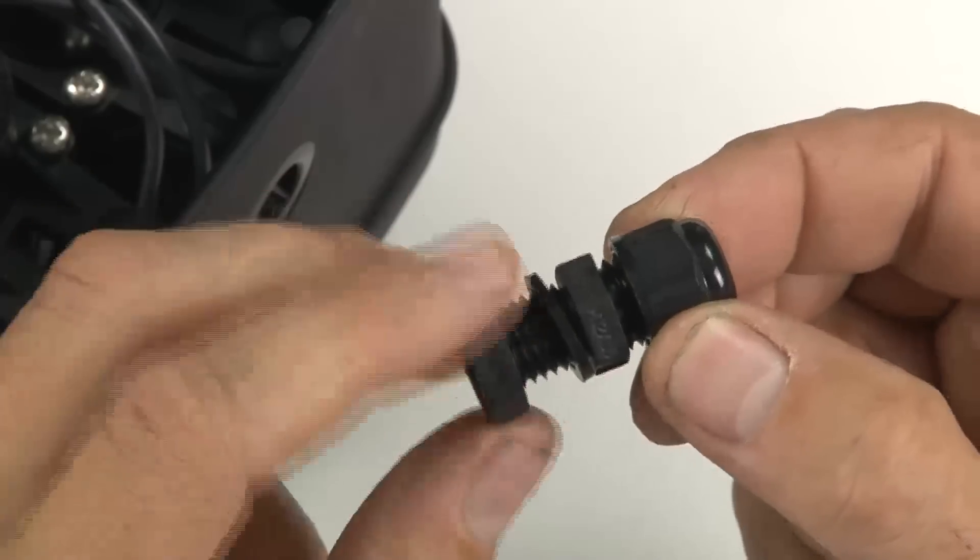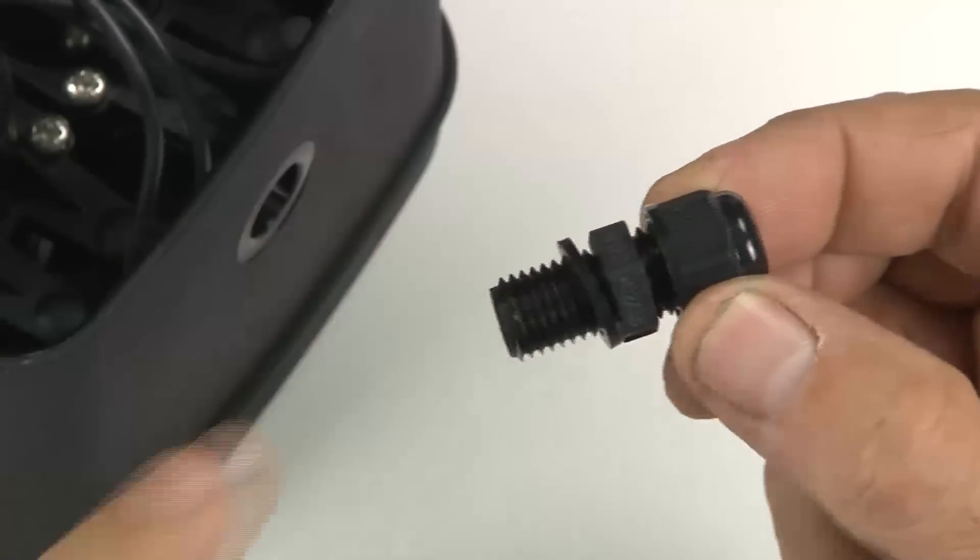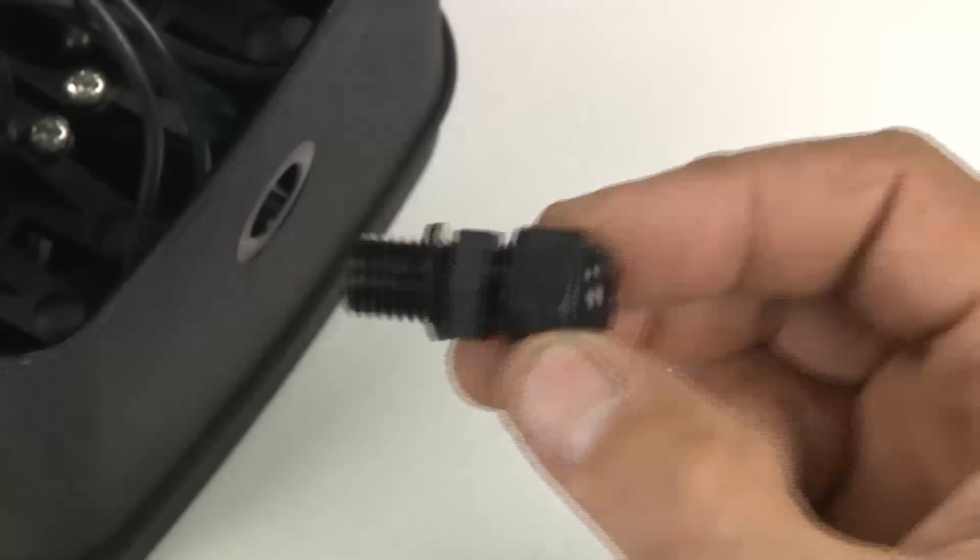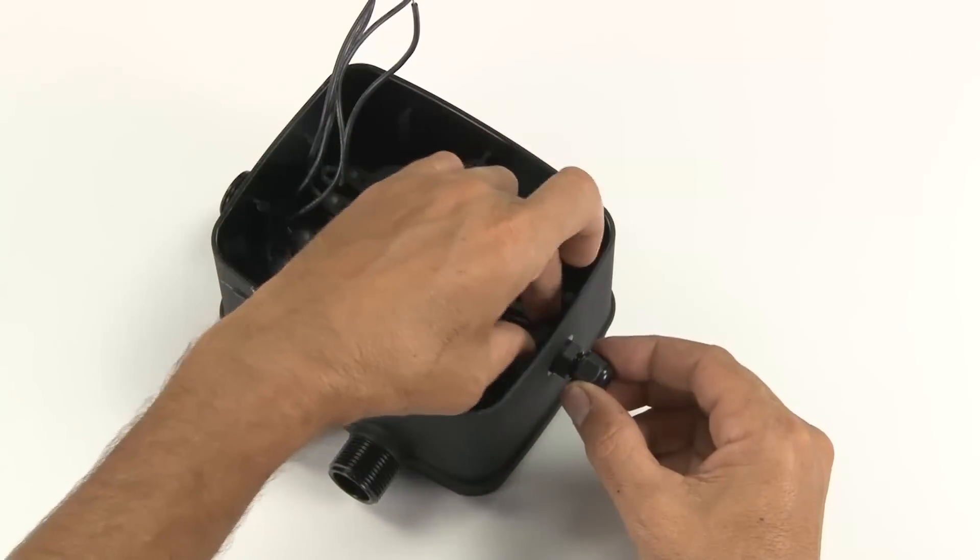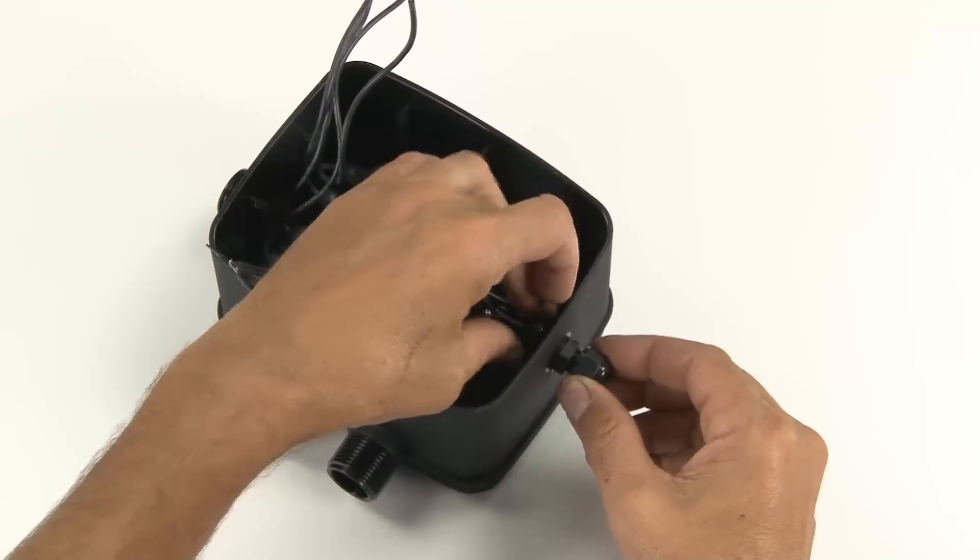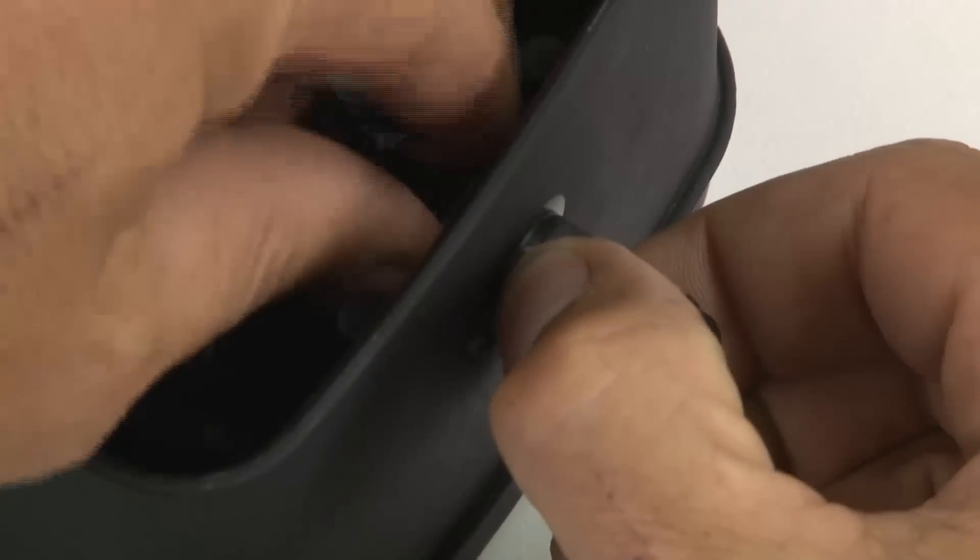Assemble the cable gland by removing the small nut, leaving the washer in place. The washer will end up on the outside of the box. Push the cable gland through the hole in your EasyValve, then replace the nut on the inside and screw to tighten.